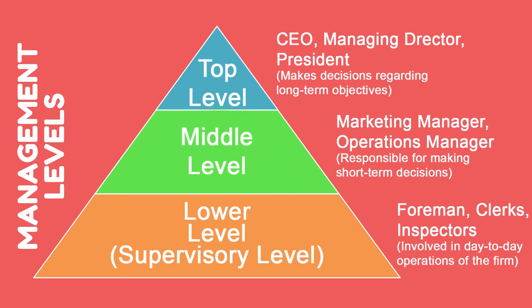The second level is middle level management. They usually link top level and lower level management in an organization. Middle level management includes marketing manager, operations manager, etc. They are responsible for making short-term decisions for the organization. Next is lower level or supervisory level management. They include foremen, clerks, inspectors, etc., and are usually involved in executing day-to-day operations of the firm.